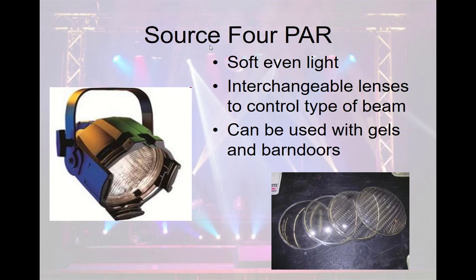The Source 4 PAR has four filaments and produces soft, even light. It's a workhorse — rather than changing out the whole lens and lamp unit as with a standard PAR, you change out different lenses for wide, very wide, narrow, or very narrow spots. You can use gels and barn doors to control this light. If you look up in the Walter Theatre, this is what you see the most of — it's great fill light.